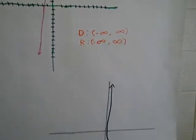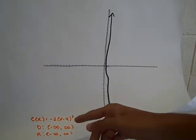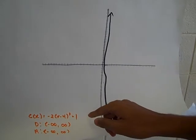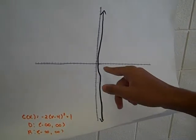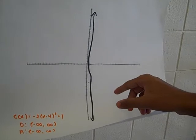And then our next graph after that was 2 times x minus 4 cubed minus 1. And since it's minus 4, it's actually plus 4, so it moves to the right and has a positive shift.